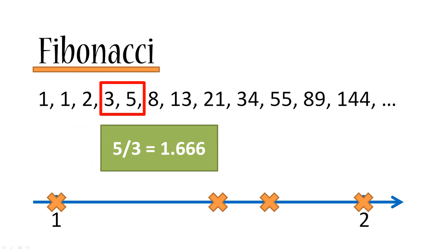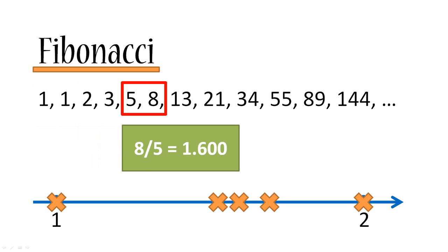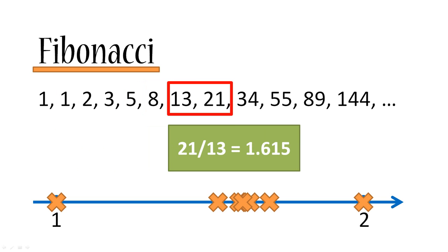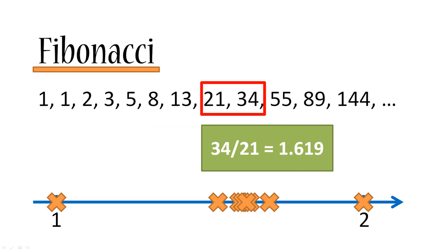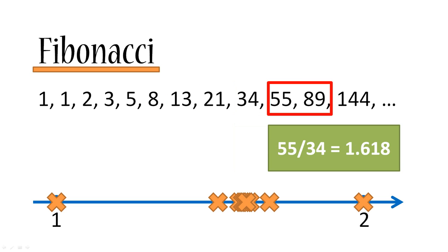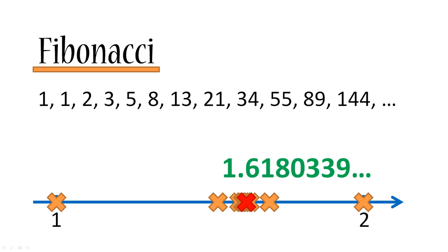Three divided by two is one and a half. Five divided by three is 1.666. Eight divided by five is 1.6. Thirteen divided by eight is 1.625. Twenty-one divided by thirteen is 1.615. So you can see where this is going - the crosses are getting closer and closer to one specific certain number, and that number is 1.6180339 and so on.